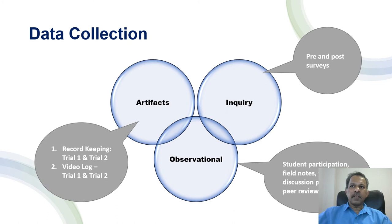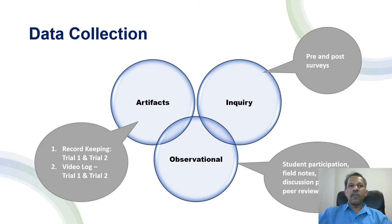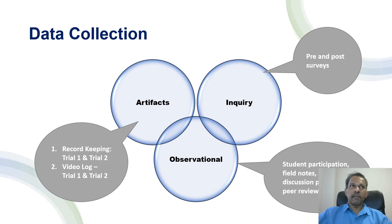My data collection is straightforward. It includes artifacts, inquiry data, and observational field notes. For artifacts I considered two summative assessments: record keeping, which accounts for 10% of the grade with one assessment each for trial 1 and trial 2, and the video log, which corresponds to 20% of the grade — also two uploads for trial 1 and trial 2. The inquiry data includes two surveys: a pre-survey at the end of trial 1 and a post-survey at the end of trial 2. The observational data is more complex, including student participation, peer review, how they interact with the group, and how they contribute.